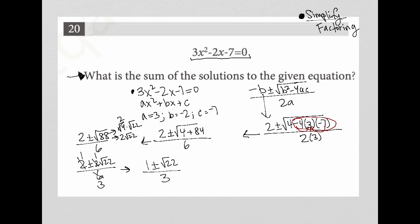So that means that our two solutions are 1 plus root 22 over 3 and 1 minus root 22 over 3. The question wants us to find the sum of those solutions. So let's find the sum.